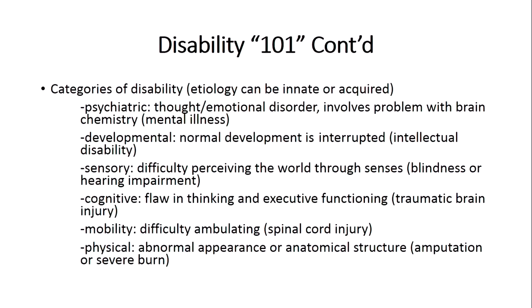Now, categories of disability. Disability can occur during gestation, the birthing process, or after birth through some life event — typically trauma-induced. So you can have both an innate or acquired disability. There are at least six categories. The first is psychiatric disability, which includes thought and emotional disorders, problems with brain chemistry, and typically involves mental illness such as schizophrenia, where there are problems in dopamine transmission and receptors.